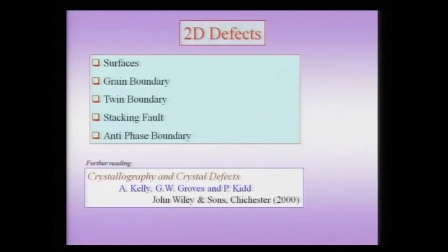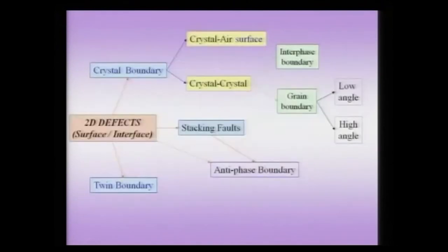After considering the dislocation, which is a one-dimensional defect, let us now proceed to two-dimensional defects. We have already described the inevitable one which is a surface in any practical crystal. We will also consider the grain boundary, the twin boundary, and the stacking fault, apart from the anti-phase boundary when we discuss two-dimensional defects. For those interested in advanced reading, they can consider the book by Kelly and Gaurav's on crystallography and crystal defects. Let us start with the broad overview of the possible two-dimensional defects and perhaps more than one way of classifying them.